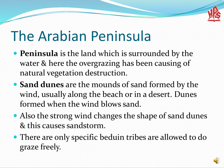Now let's come to the next point: sand dunes. These are the mounds formed by strong wind and its pressure. The wind changes the shape of dunes, and this causes sandstorms. There are only specific areas where tribes are allowed to graze freely, and this process causes the destruction of natural beauty.